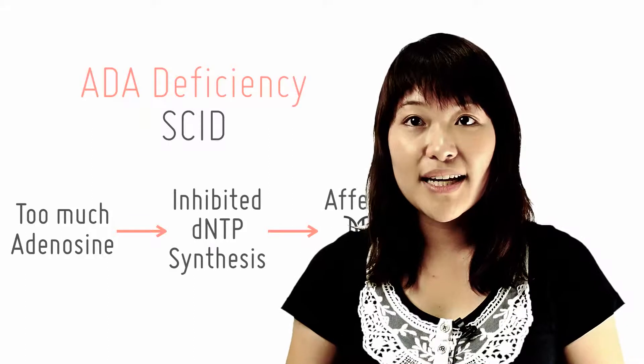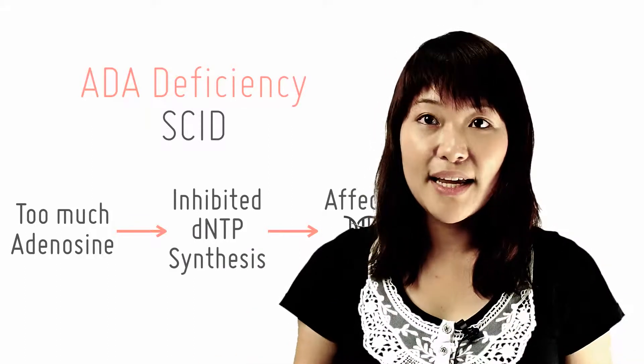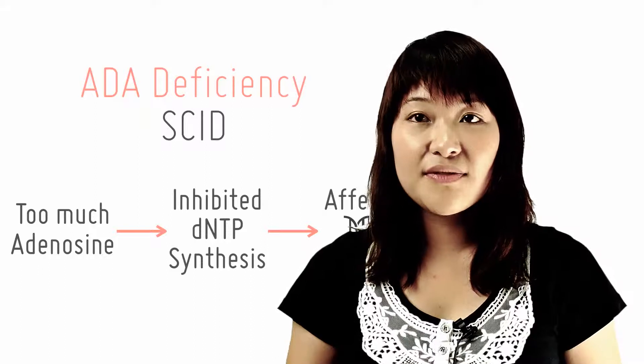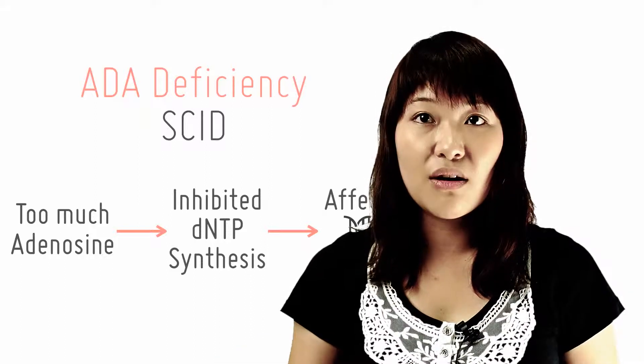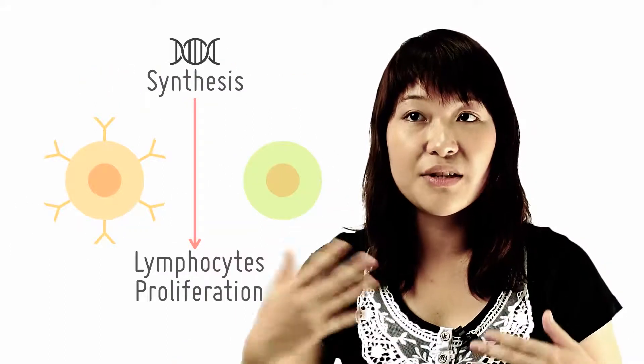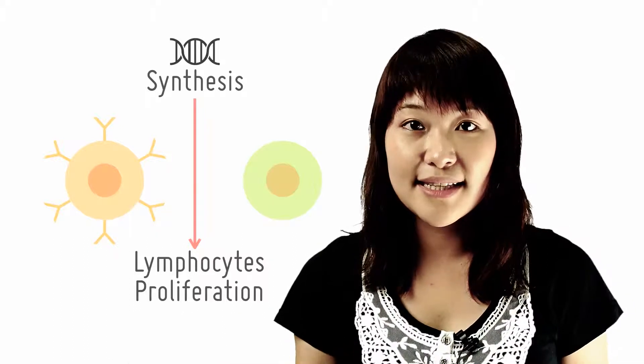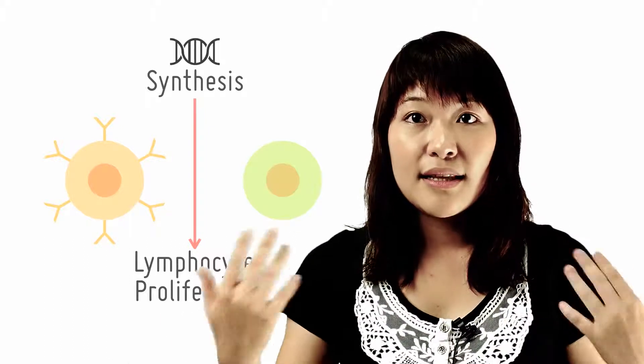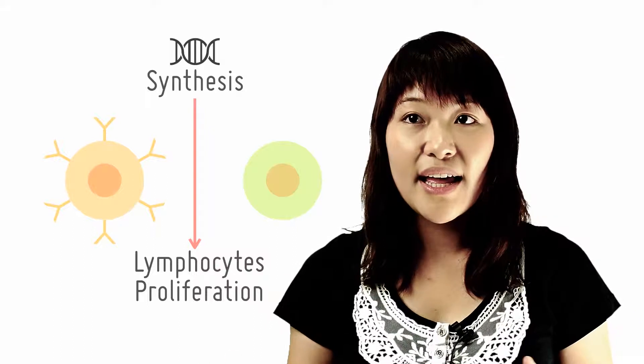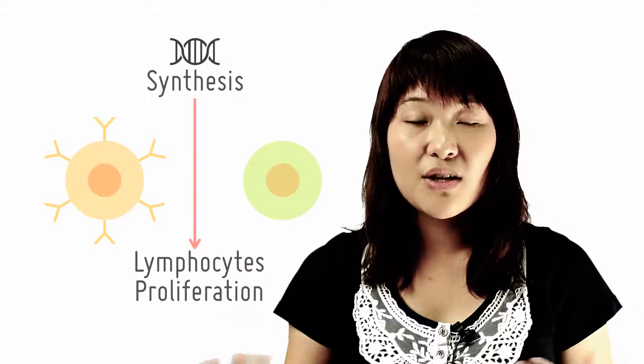In case you are wondering, dNTPs are your nucleotides that make up your DNA. The effectiveness of the immune system depends on lymphocyte proliferation and maturation and hence DNA synthesis. Without our nucleotides, DNA synthesis is impaired and hence the immune system is compromised.